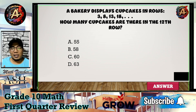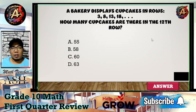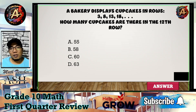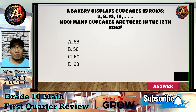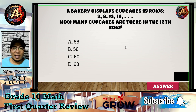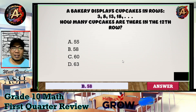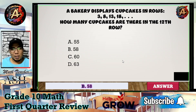Using the formula from question seven: a₁₂ = 3 + (12-1)×5. Now 12-1 = 11, and 11×5 = 55. Then 55 + 3 = 58. The correct answer is letter B.